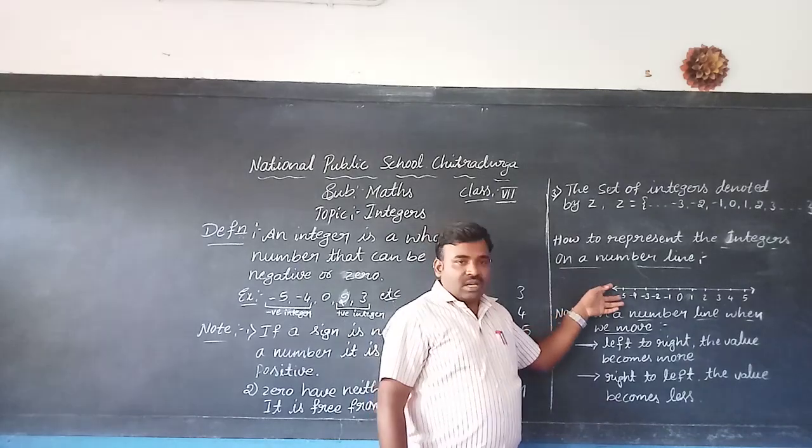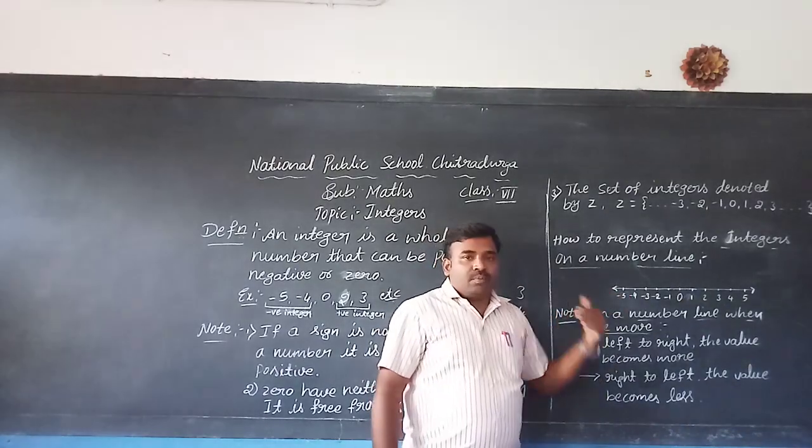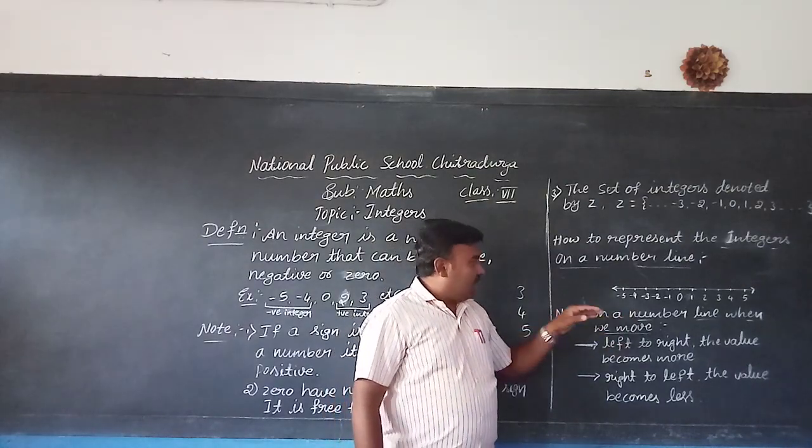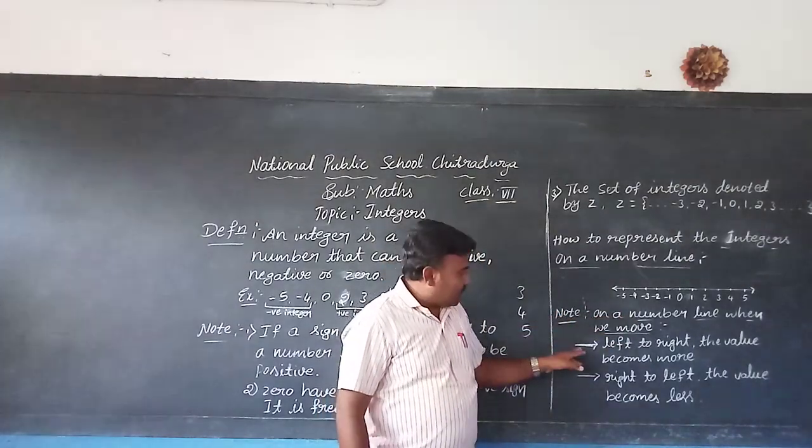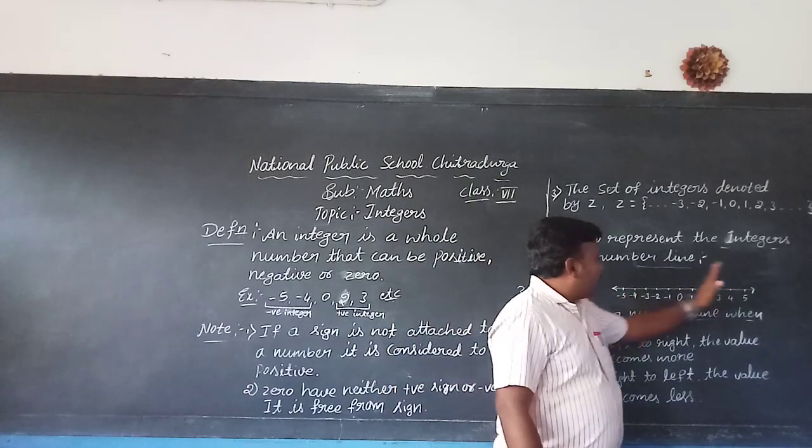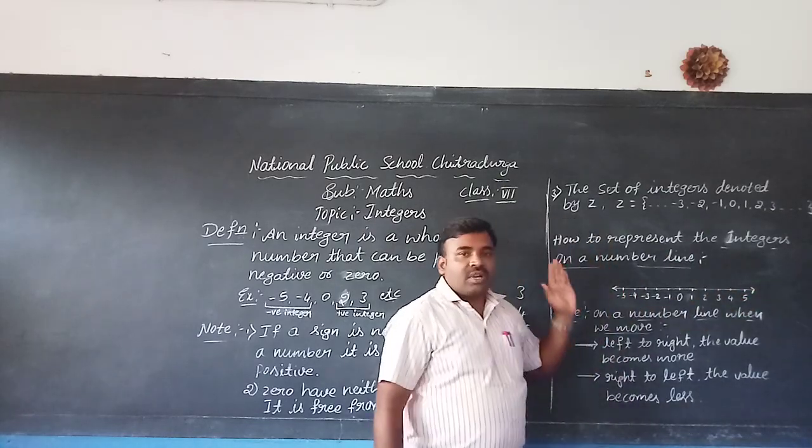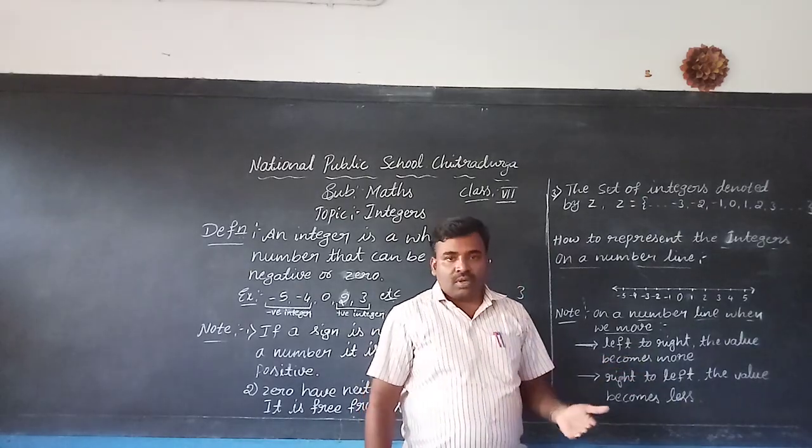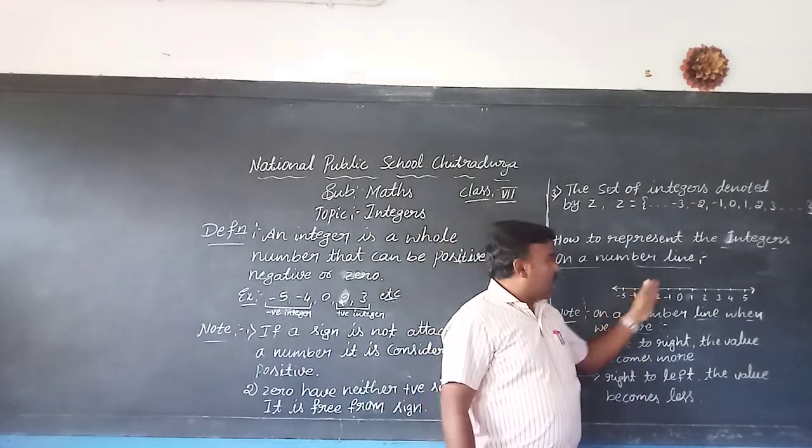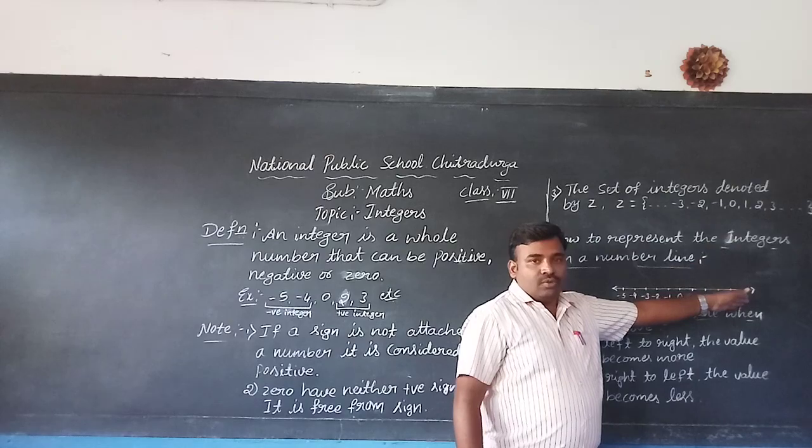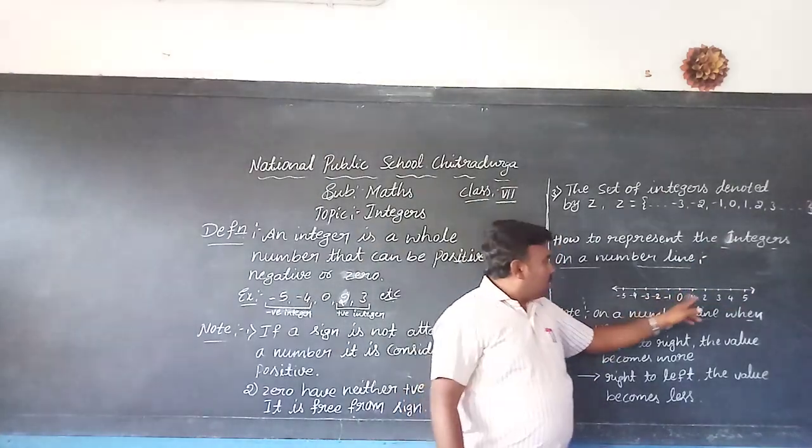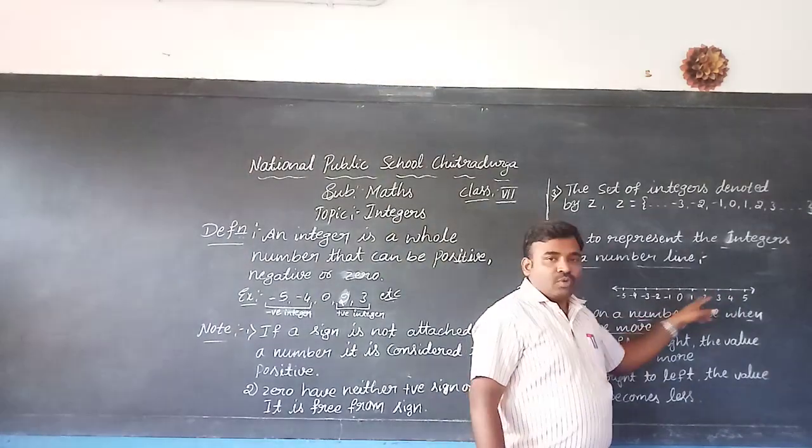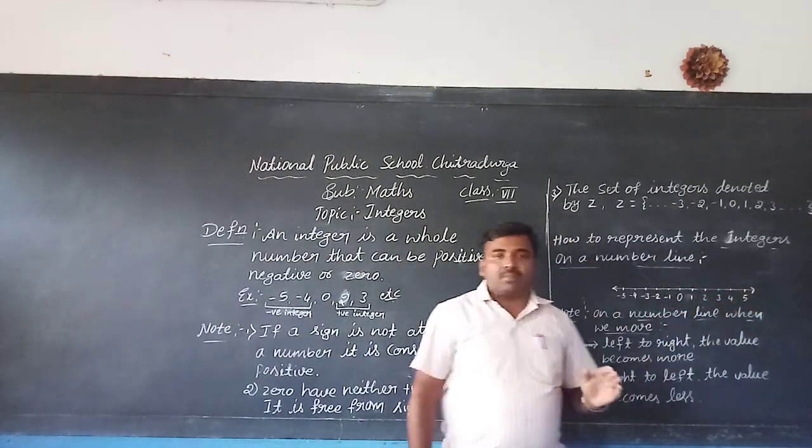Based on this number line, some important points is there. The first one is on the number line when we move first one, left to right. If you are moving from left to right, the value becomes more. That means the numbers are in the more values. You can observe here, 1, 2, 3. So left to right, if you are moving left to right, the value becomes more.